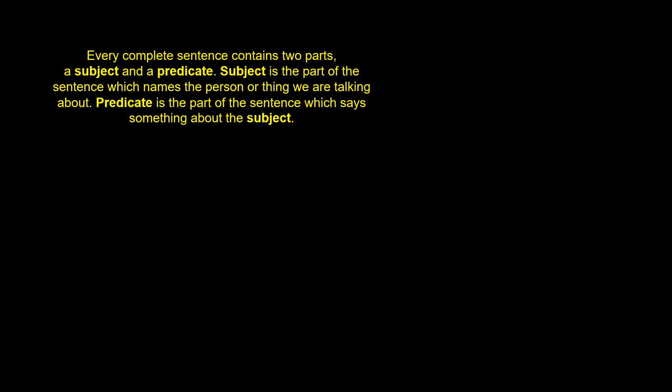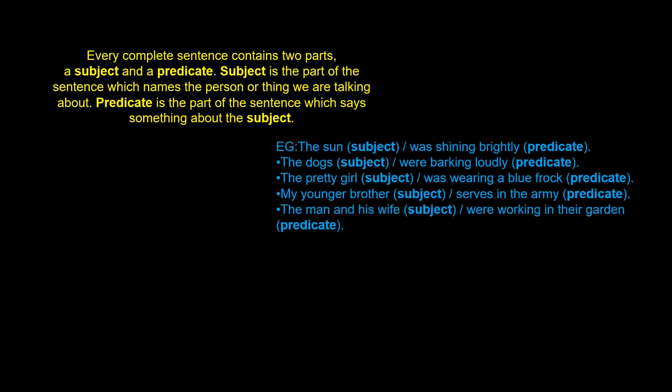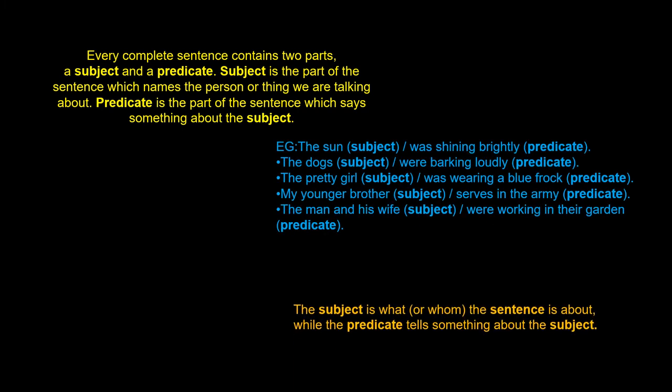Subject is the part of the sentence which means the person or thing we are talking about. Predicate is the part of a sentence which says something about the subject. Here are some examples. The subject is what or whom the sentence is about, while the predicate tells something about the subject.